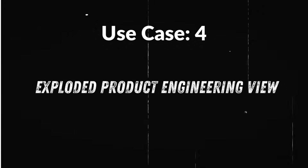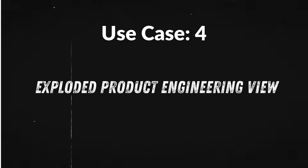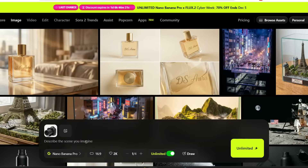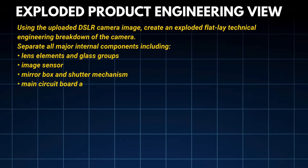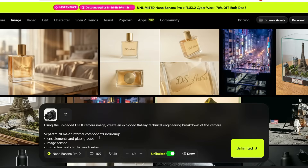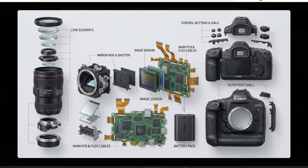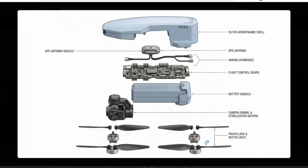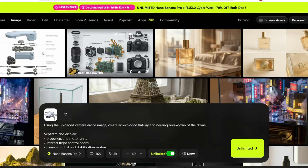Use case 4: Exploded product engineering view. This is where Nano Banana Pro stops being just a visual tool and starts behaving like an engineering visualization system. I upload a camera image and add the prompt: 'Using the uploaded DSLR camera image, create an exploded flat-lay technical engineering breakdown of the camera — separate all major internal components.' The result is genuinely impressive: every internal layer is separated logically, you can clearly see the sensor stack, mirror box placement, ribbon cables, and even accurate battery compartment geometry. I then uploaded a drone image with the same prompt and the result is equally insane — actual technical comprehension inside the image generation.